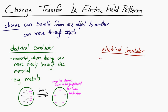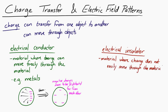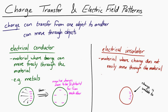Insulators, or electrical insulators, are materials where charge does not easily move through them. We're going to assume that charge, once placed on an insulator, is stuck there. So if you have an insulator with some negative charge on one side of it, that charge cannot move through the material — once there, it is stuck there.